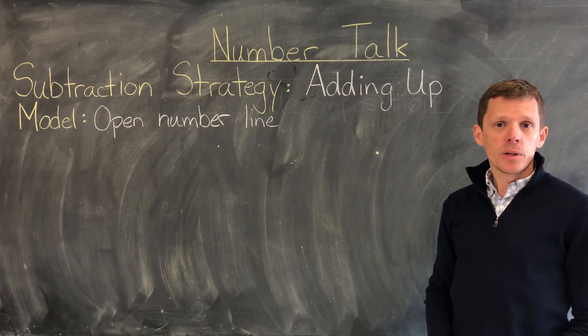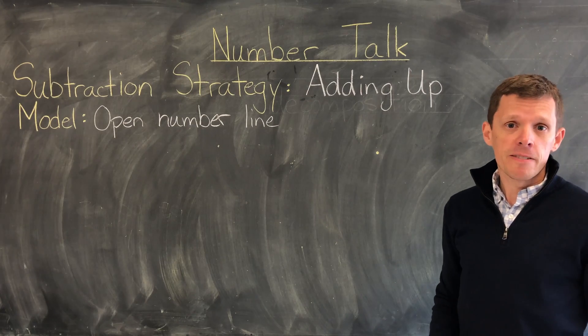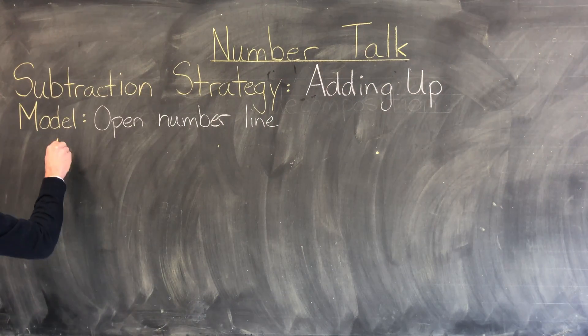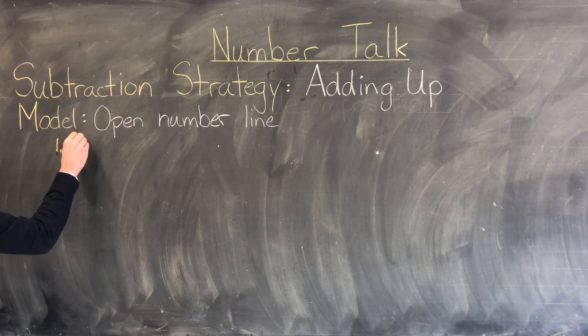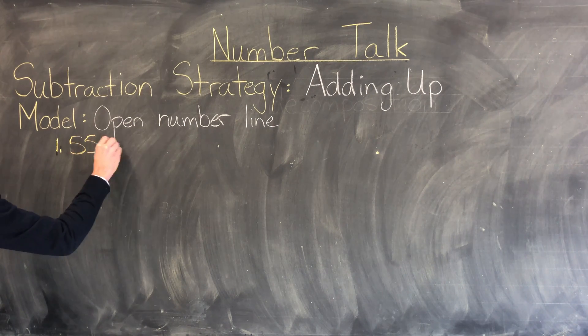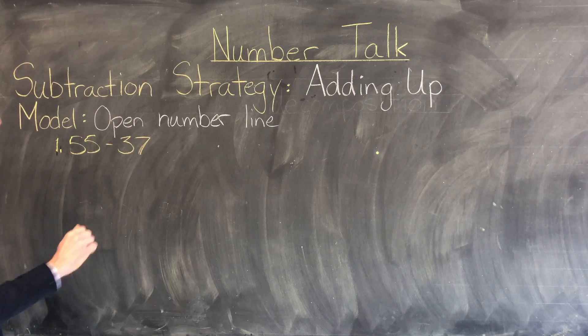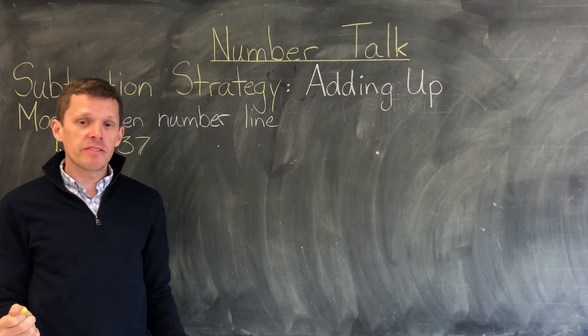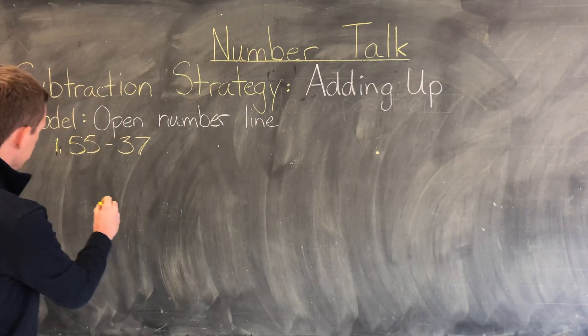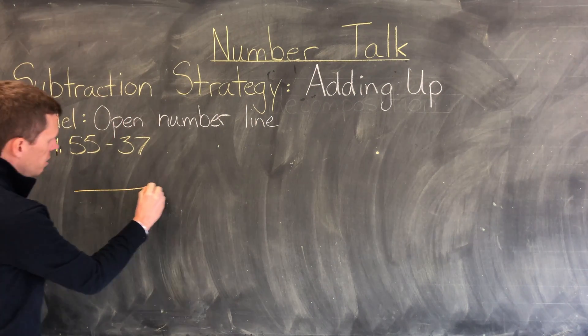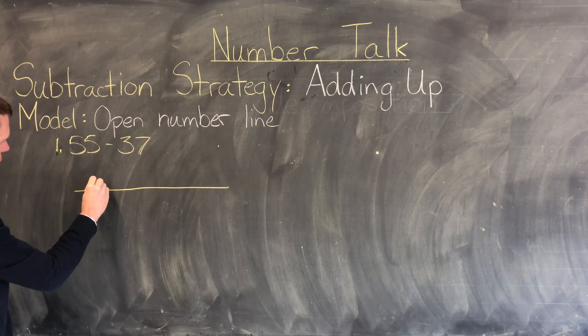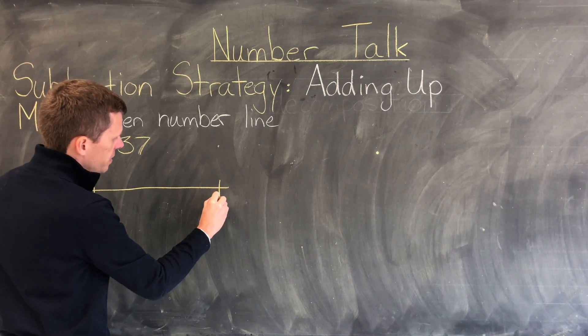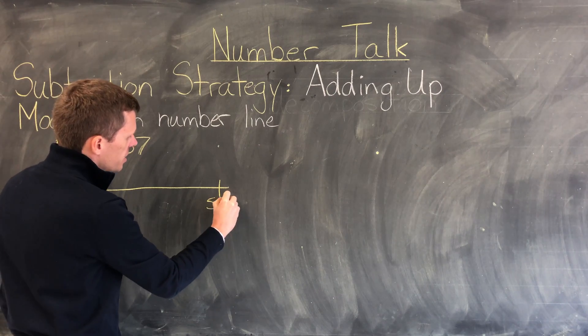For the first example, let's try 55 subtract 37. So I'm going to create an open number line and place both 55 and 37 on the number line. Here's my number line, I'm going to put 37 at this end and 55 at this end.